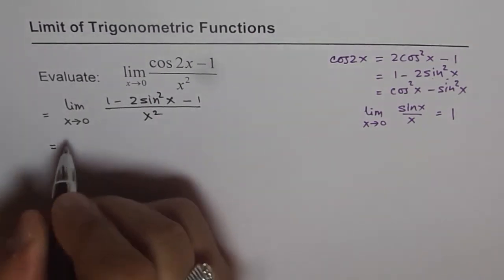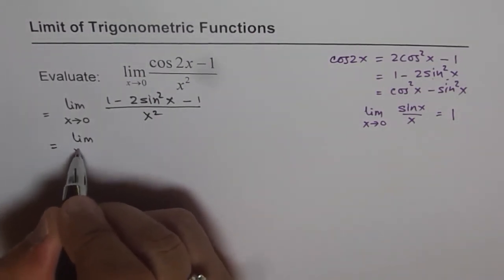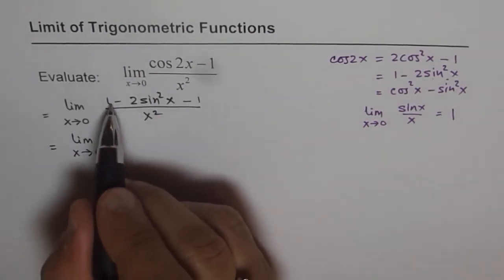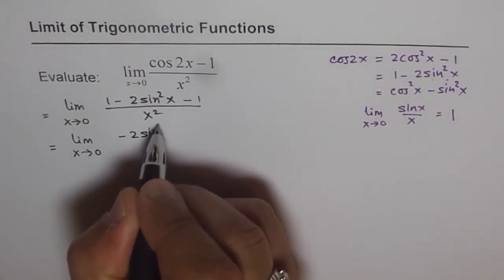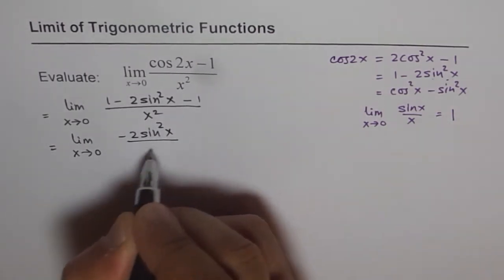Now this can be written as limit x approaching 0. 1 minus 1 is 0. So we have minus 2 sin squared x over x squared.